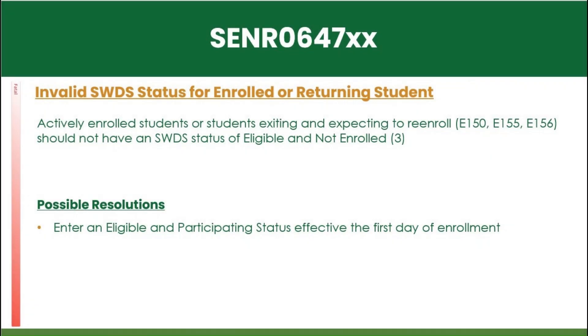SCNR 0647: The student has a status file of eligible but not enrolled, with an active enrollment and an active plan. This requires a status file to be manually entered into CALPADS.